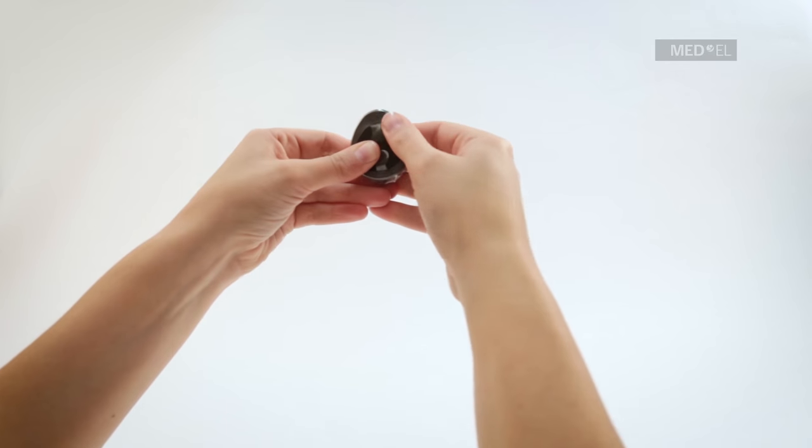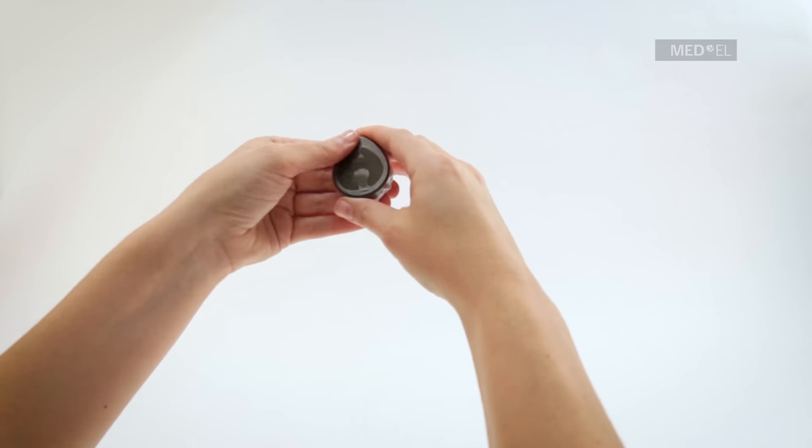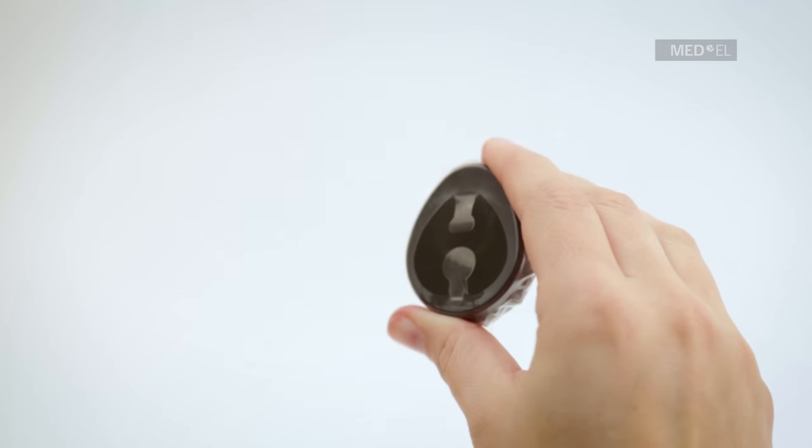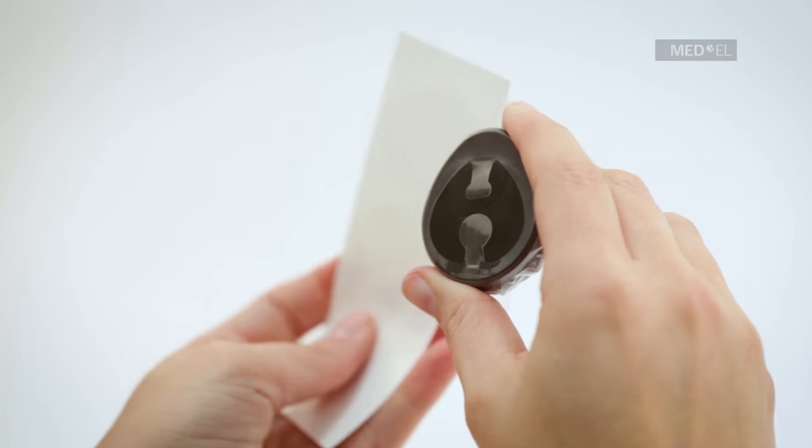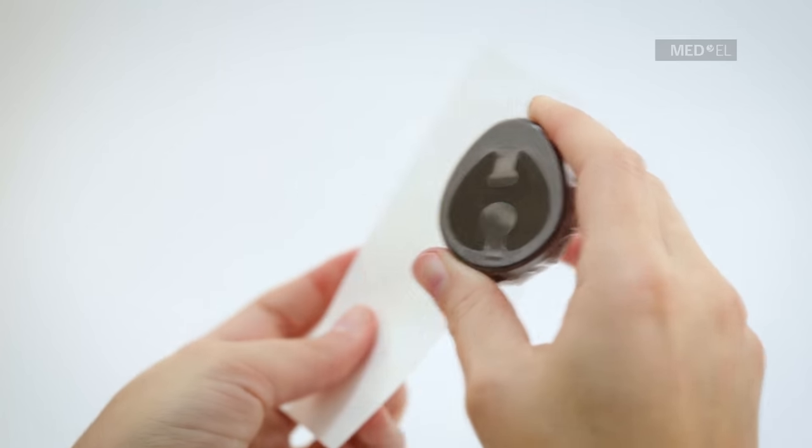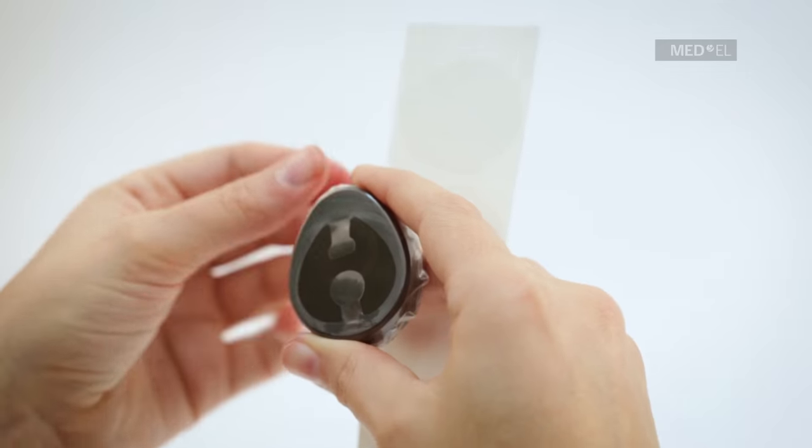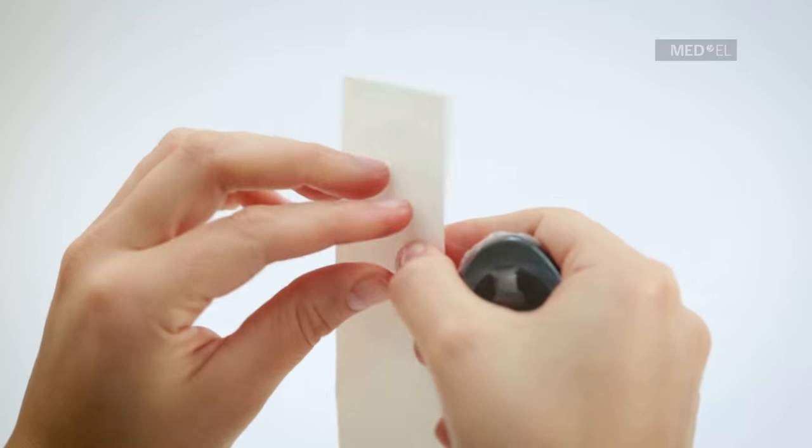The included adhesive strips are used to cover this opening. Before attaching the adhesive strip, make sure that the strip and the surface of your Rondo and the waterware are clean and dry. Remove the adhesive strip from the protective cardboard.